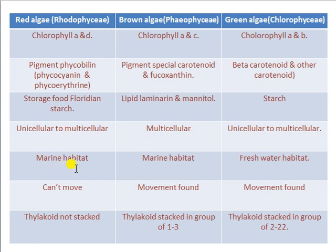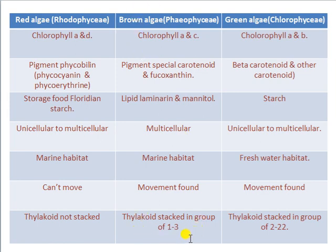Red algae cannot move because they lack flagella. Brown algae can move because they have flagella. Green algae also show movement because they have flagella. Red algae thylakoids are not stacked; brown algae thylakoids are stacked in groups of one to three; green algae thylakoids are stacked in groups of two to twenty-two.